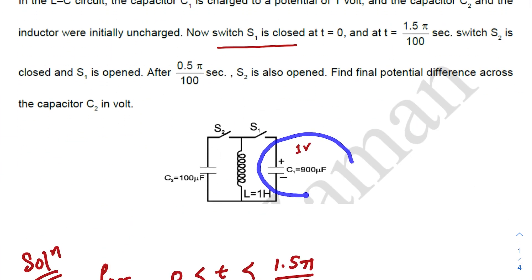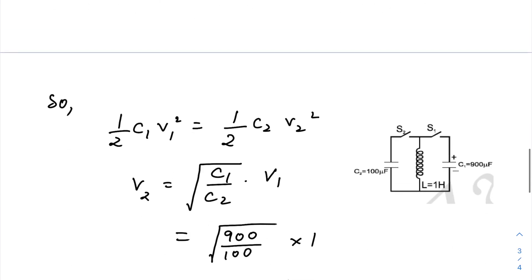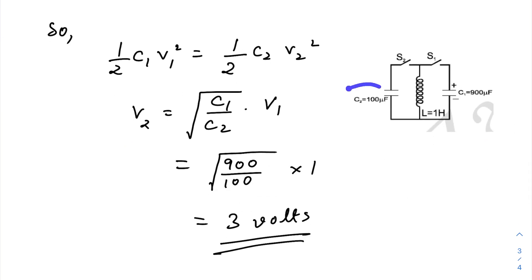That means we can say that the whole energy that was present in the capacitor C1 is transferred to capacitor C2. So we can just write (1/2)C1V1² = (1/2)C2V2². If you just follow this circuit, okay, now calculating, just put the values of C1 and C2, and initial V1 was I think one volt, right? Just put the value. So final potential difference of C2 is three volts.